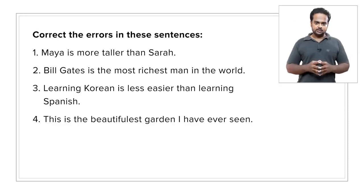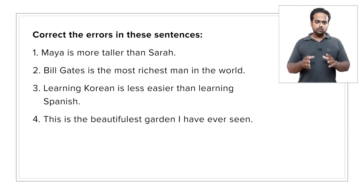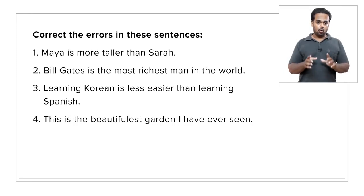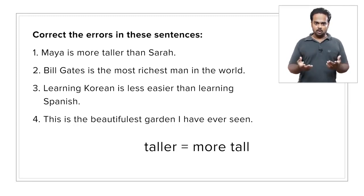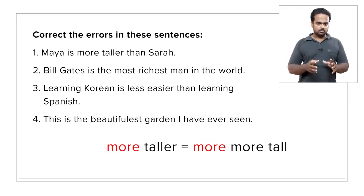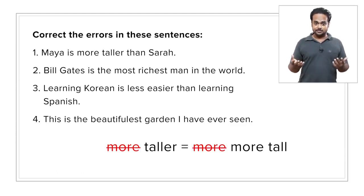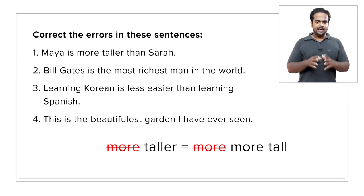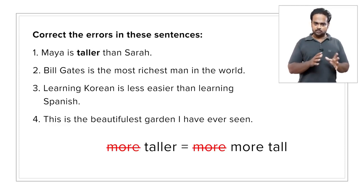OK, in the first sentence the error is that an ER form, taller, is used along with more. Remember that the word taller means more tall. So if you say more taller, that's like saying more more tall, which doesn't make sense. The correct way to say this is: Maya is taller than Sarah. Remember that whenever you use an ER form, don't put more before it.